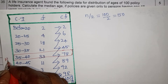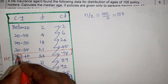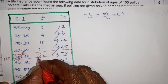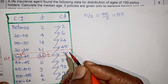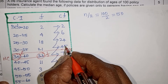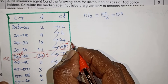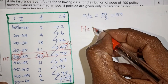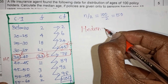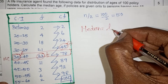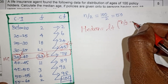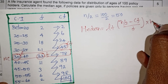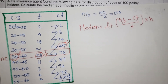The lower limit L of the median class is 35. The central level frequency F corresponds to that class. The preceding cumulative frequency CF is noted. Now applying the median formula: Median equals L plus n by 2 minus CF, divided by f, multiplied by h.